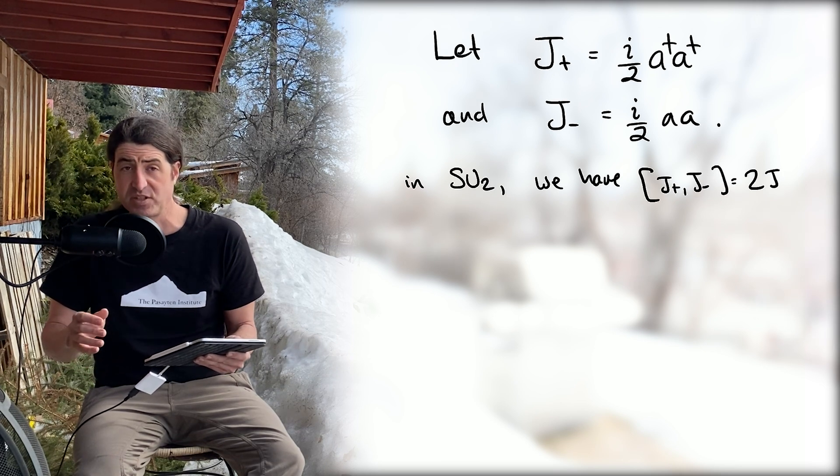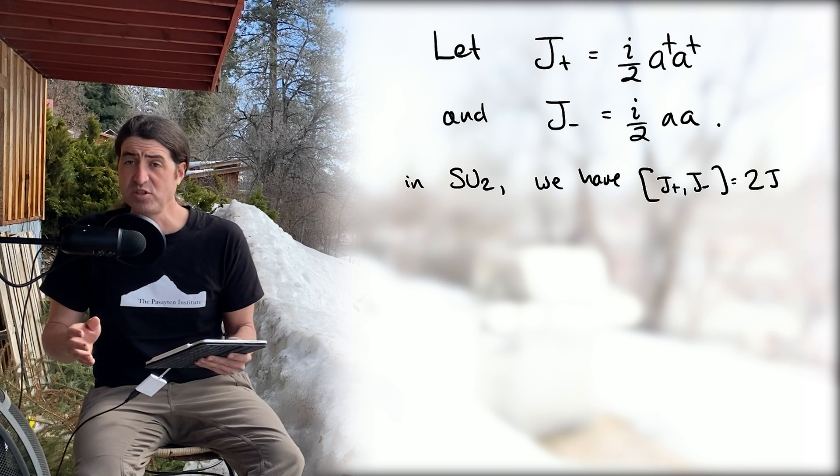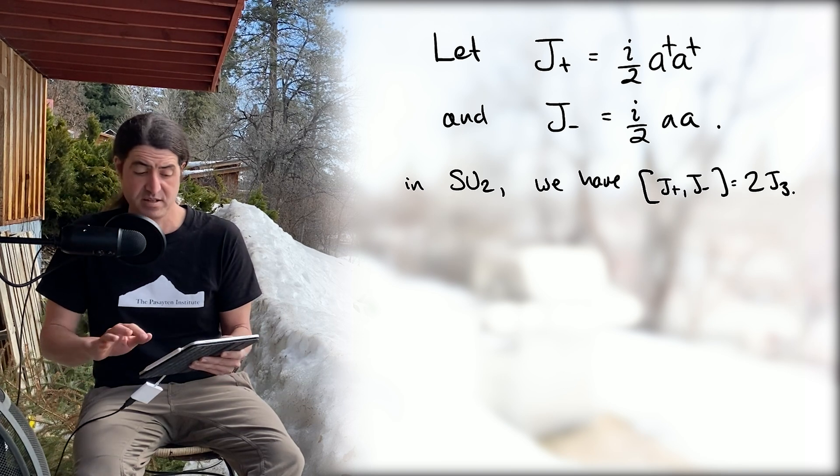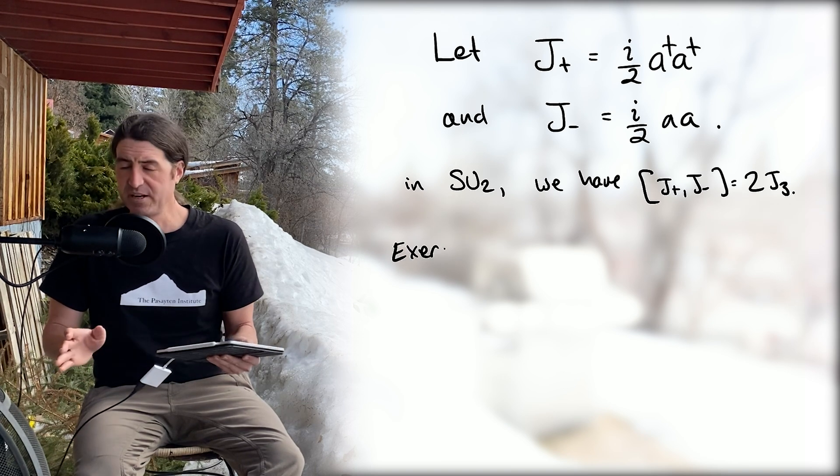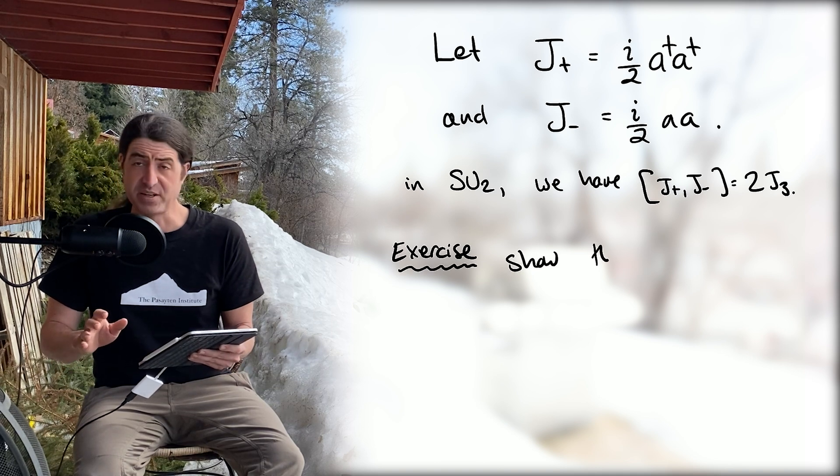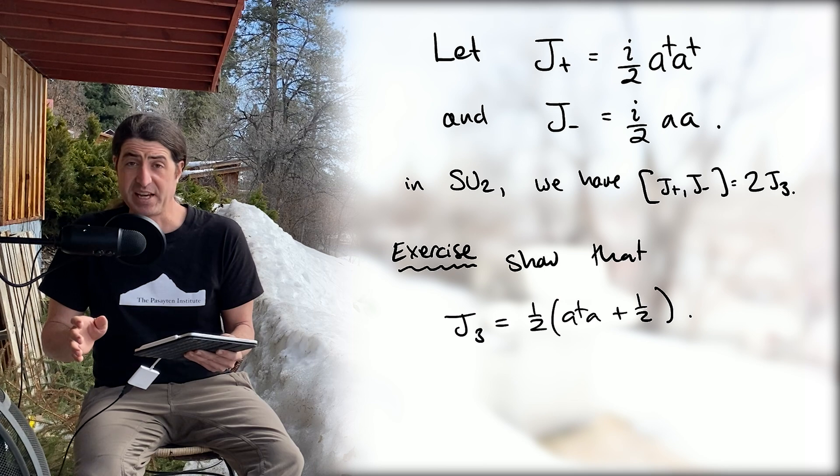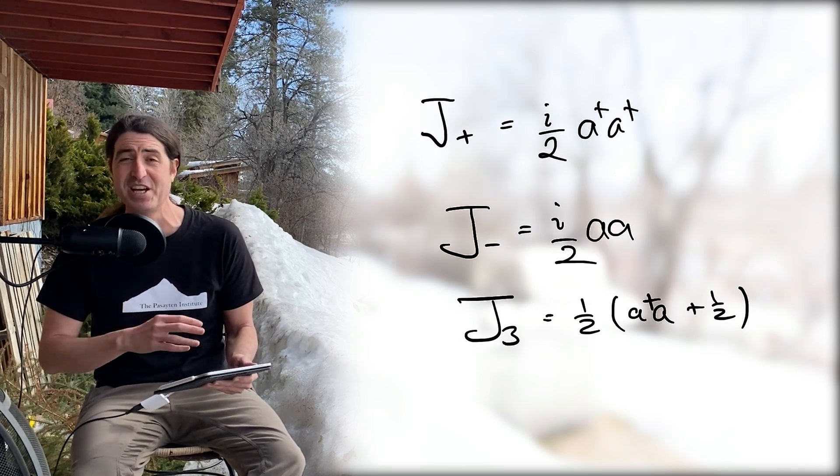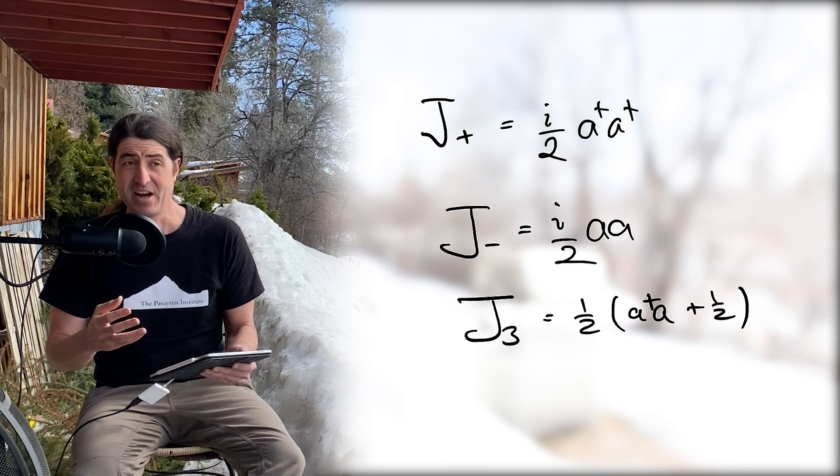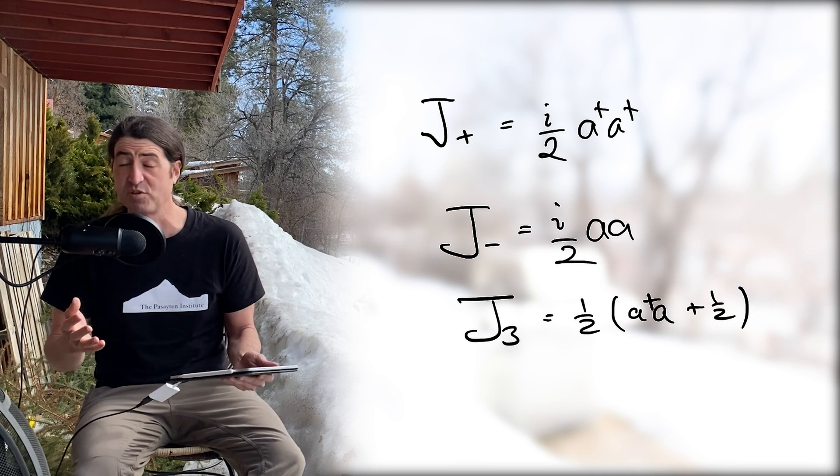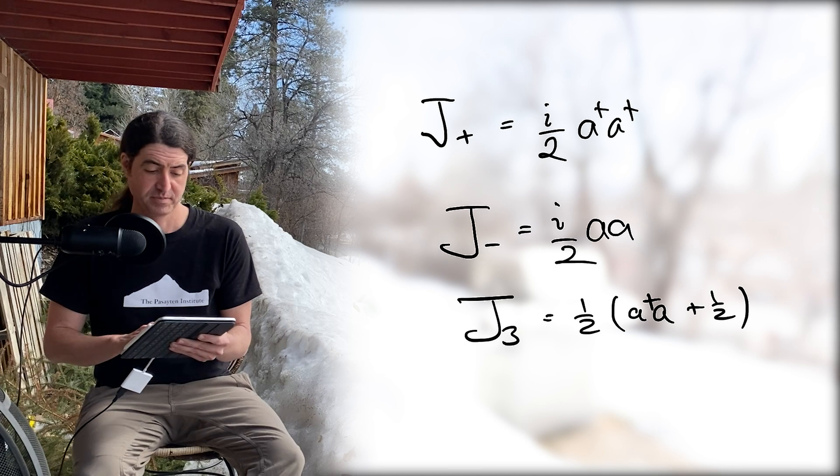Recall that the Lie algebra of SU(2) requires that the commutator of J+ with J- gives you twice J3. Here's an exercise for you: prove by direct computation that J3 is equal to one half the quantity a dagger a plus one half. In other words, if you include that operator J3, you have a representation of SU(2).